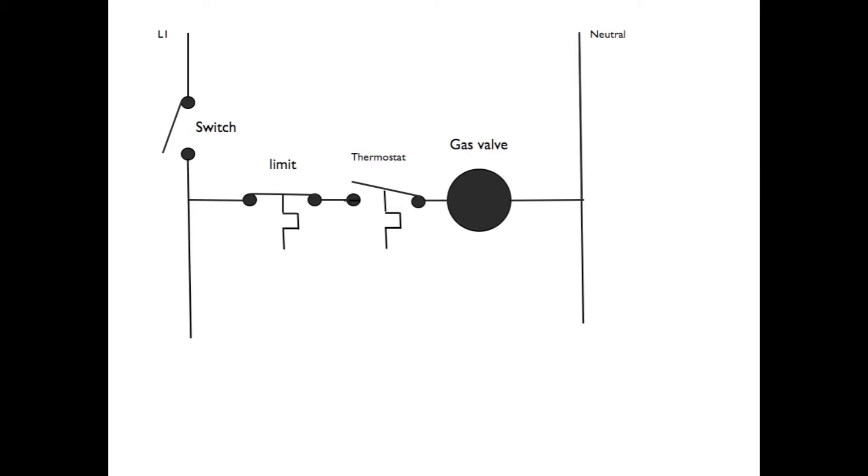The system switch is actually up in the L1 line, and then we've added a limit switch, and then there's a thermostat and a gas valve.